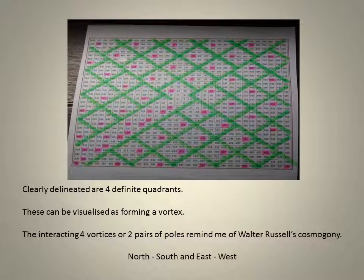Clearly delineated are four vortices. The interacting 4 vortices, or 2 pairs of poles, north-south and east-west.